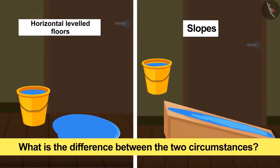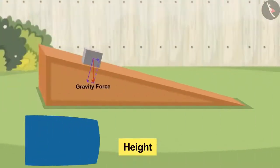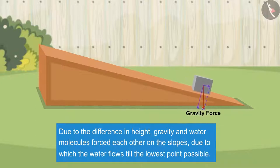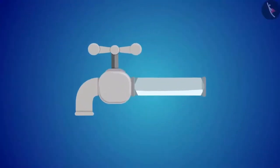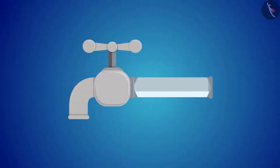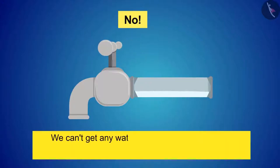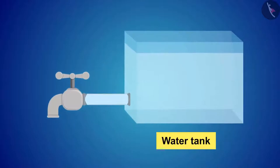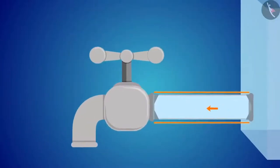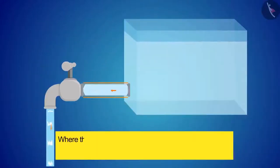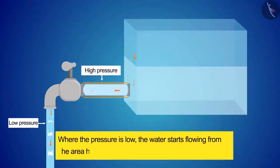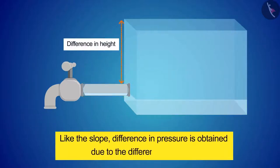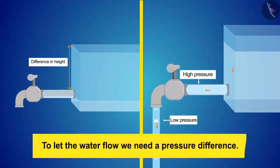So what is the difference between these two circumstances? The answer is height. Due to the difference in height, gravity and water molecules force each other on the slopes, causing water to flow to the lowest point possible. What will happen if instead of a horizontal floor a water pipe is taken? We can't get water from this pipe simply when we open the tap — there needs to be a force from behind, or pressure. To create this pressure, the water pipe should be connected to a water tank. As there is plenty of water in the tank, there will be more pressure at the mouth of the pipe. The water starts flowing from the area of high pressure to the area of low pressure. So we can conclude that to let water flow, we need a pressure difference.